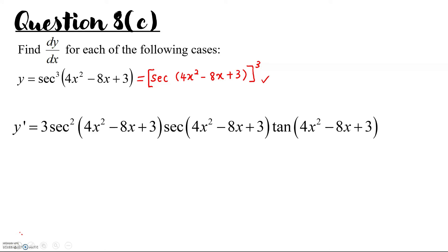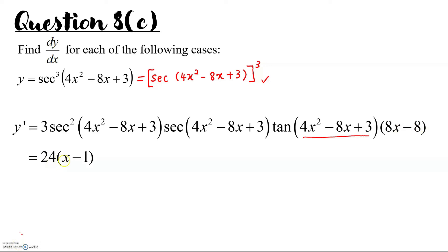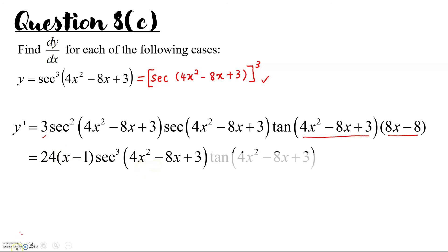Copy back the item in the bracket with secant and tangent, and the last step is to differentiate the item inside: differentiating (4x squared minus 8x plus 3) gives 8x minus 8. Simplifying: secant squared times secant gives secant cubed, combined with 3 times (8x minus 8). The final answer is (24x minus 24) times sec cubed(4x squared minus 8x plus 3) times tan(4x squared minus 8x plus 3).